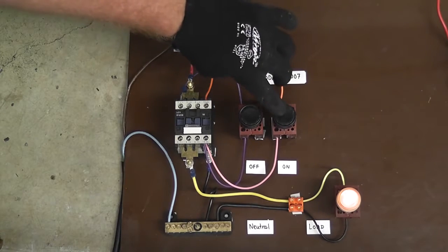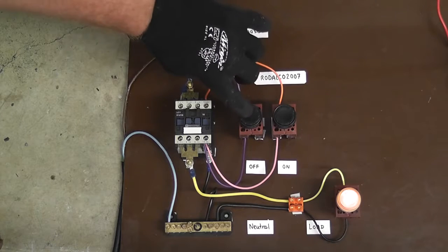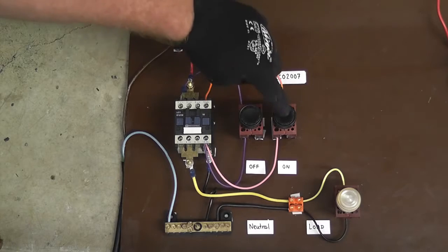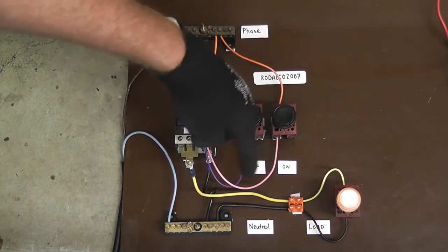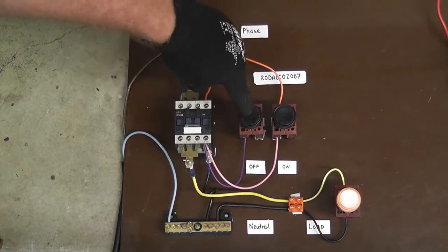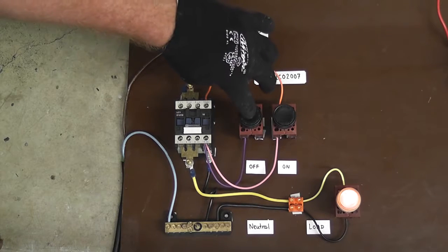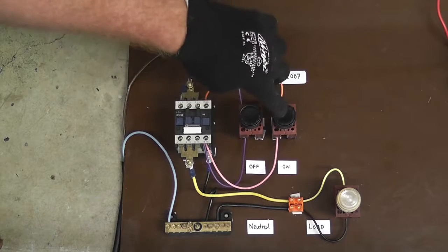The actual on button is a normally open contact, the off button is a normally closed contact so power goes in, I make contact, the relay gets energized through here, that contact is closed, drives the relay coil, pulls the relay in, stays on. Touch this button, off, relay falls out, load lamp is off.